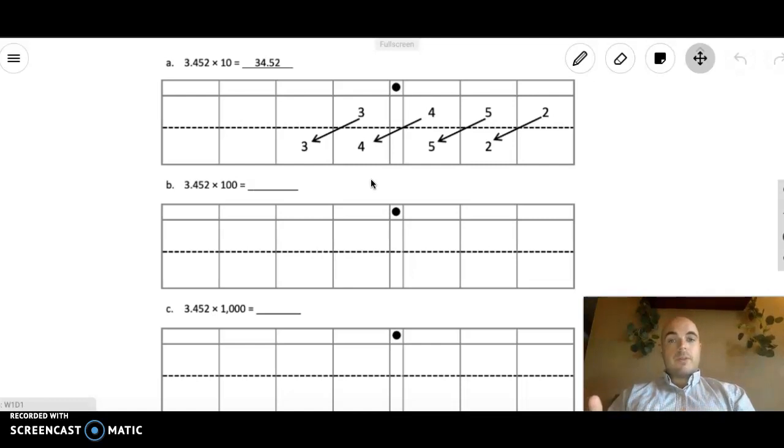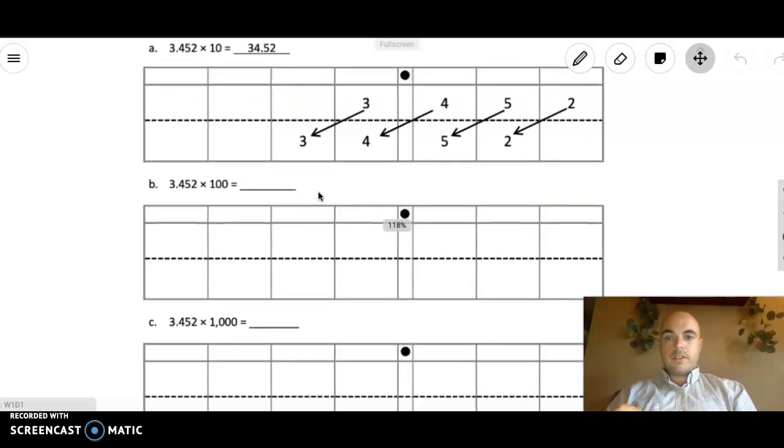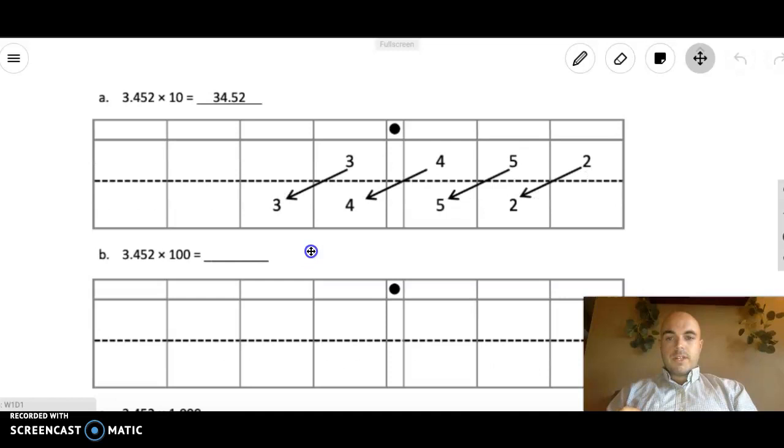So let's look at our example here at the top. So we have our decimal, I'm going to zoom in just a little bit. So we have our decimal 3.452 and we're multiplying it times 10. Now this is a really great example because it of course has everything on it for you. So here's our decimal point and here's our place value chart. We have 3.452.